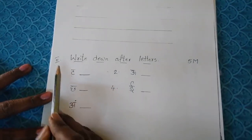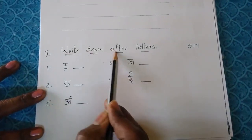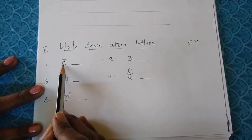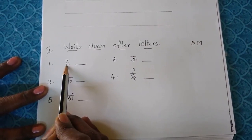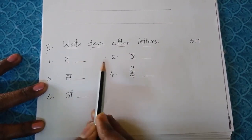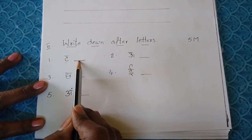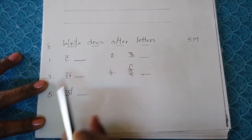Now next bit is write down after letters. Example look here. I have given letter T, they have to write next letter. T, T. Second letter they have to write.